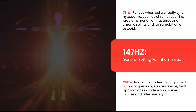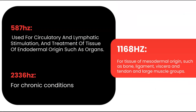292 hertz is for tissue of ectodermal origin, meaning the outside, such as body openings, skin, superficial nerves, wounds, and eye injuries. 587 hertz is endoderm tissue, meaning the inside, ideal for circulatory and lymphatic stimulation as well as organs — useful if lymph flow is sluggish, healing is slow, or there's stagnation of blood or lymph. 1168 hertz is mesodermal tissue, meaning the middle — connective tissue such as bone, ligament, viscera, tendons, and muscles.